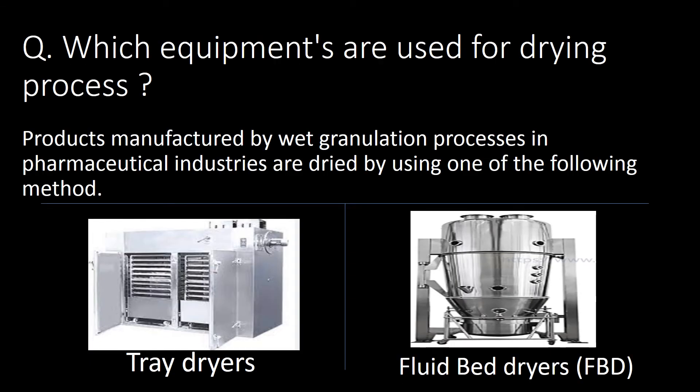Which equipment is used for the drying process? Products manufactured by the wet granulation process in pharmaceutical industries are dried using one of two commonly used equipment types.